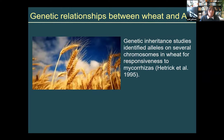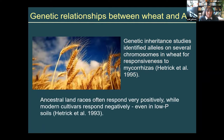Early work we did at K-State found a linkage to genetic inheritance between the crop or host plant and the fungi. We found that ancient land races often responded very positively to the mycorrhizal fungi, where the modern cultivars of wheat tended to respond negatively even in low-phosphorus soils. Our hypothesis was that perhaps while we were breeding for greater grain production, we inadvertently turned off the genetics that allowed the plant to form this association with beneficial fungi.